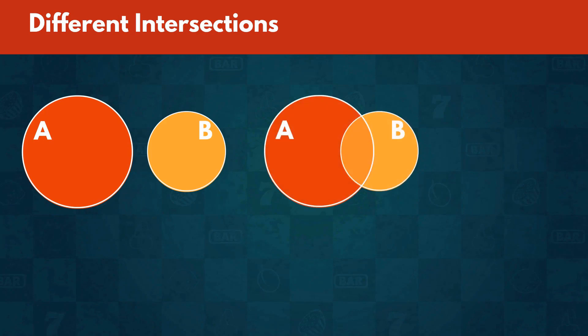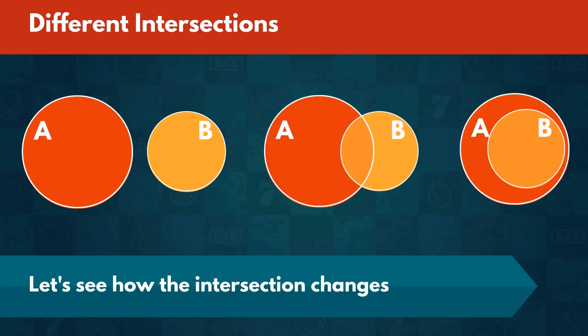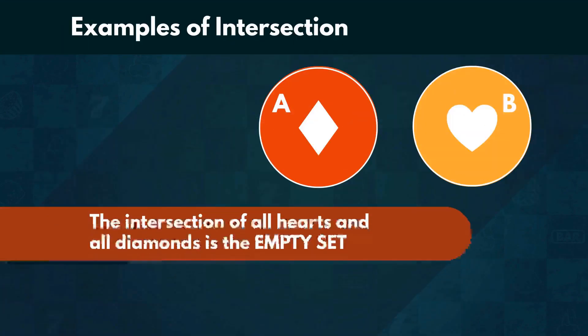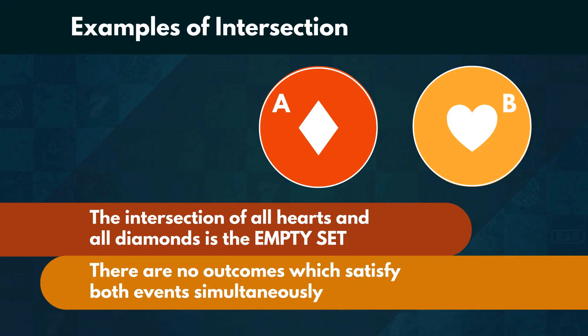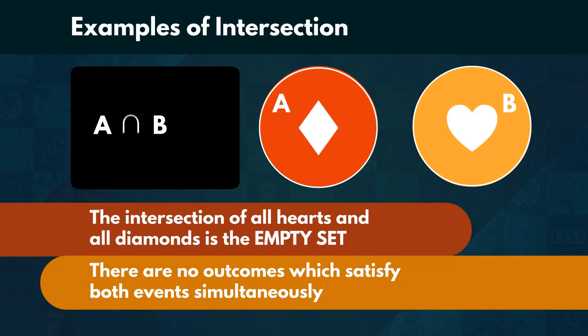Let us look at examples and see how the intersection changes. The intersection of all hearts and all diamonds is the empty set. The empty set has no elements, so there are no outcomes which satisfy both events simultaneously. We would write this as A intersect B equals the empty set.